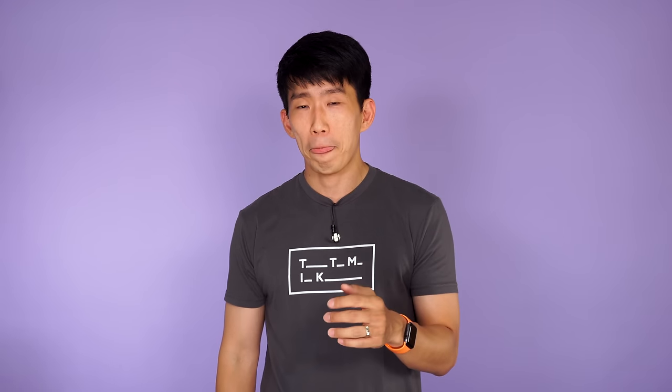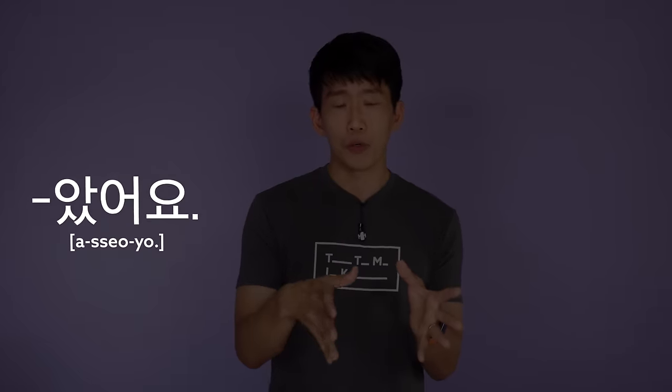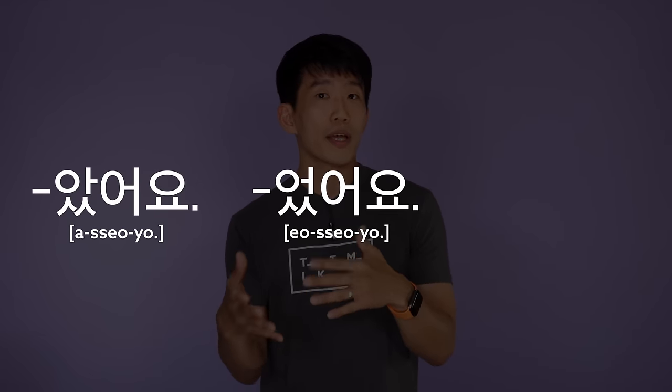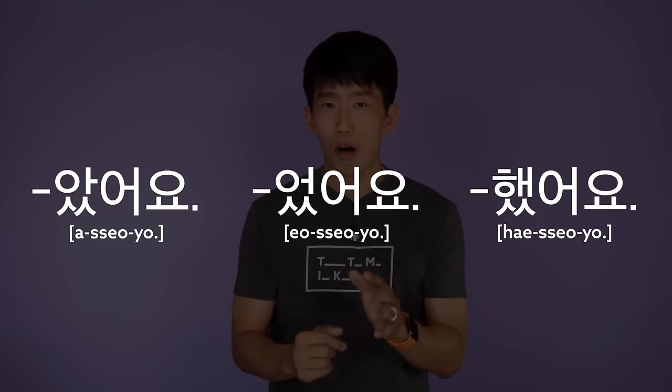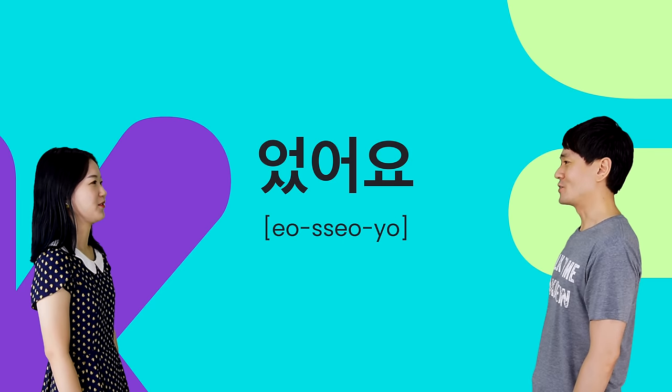That's the main thing to understand from this video. In Korean, most sentences in the past tense used in daily conversations end with 았어요, 었어요, or 했어요. There are various other forms, such as casual language used among friends and more polite or formal forms, but those can wait until you learn more Korean.